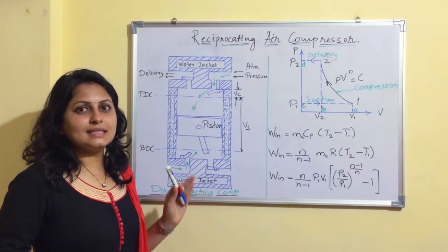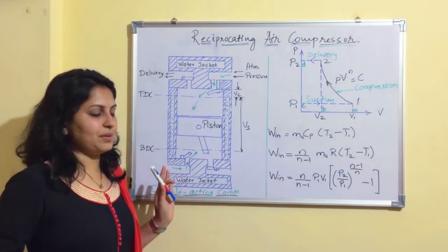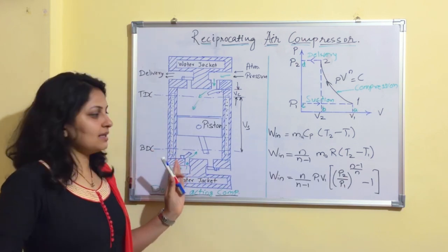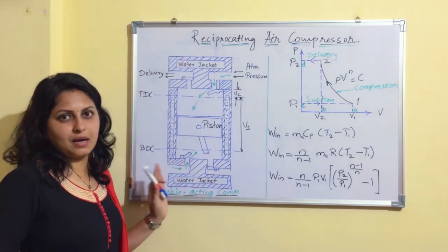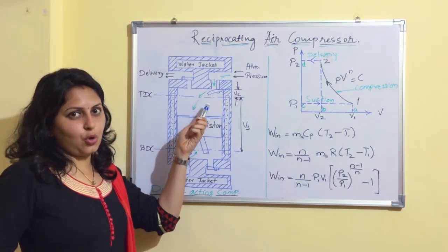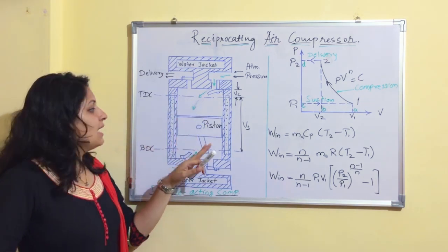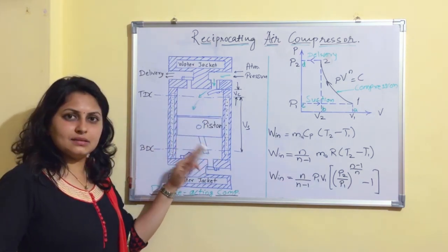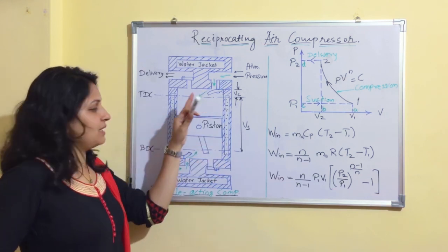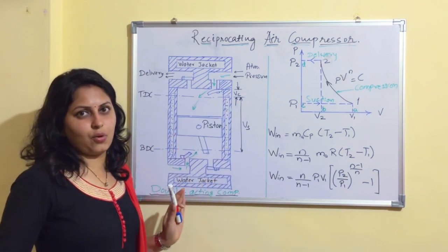Now let us take a look at the double acting compressor. The arrangement is the same as the single acting compressor, but with an additional inlet valve and delivery valve at the opposite end. As the piston moves from top dead center to bottom dead center, suction takes place on one side while compression and delivery occur on the other side. When the piston moves from bottom dead center to top dead center, the process reverses. This is the working of a double acting compressor.